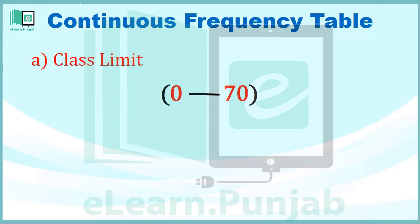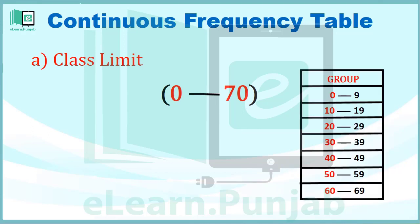इससे पहले वीडियो की Example 2 में हमने देखा था कि इसमें 0, 10, 20, 30, 40, 50, 60 Lower Class Limits हैं۔ جبکہ 9, 19, 29, 39, 49, 59, 69 Upper Class Limits ہیں۔